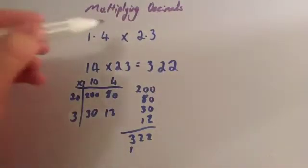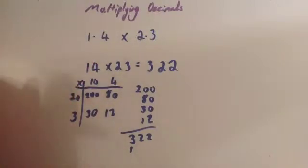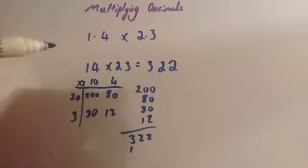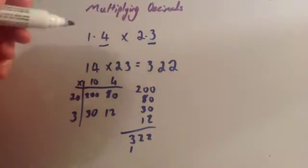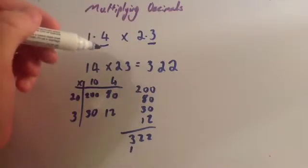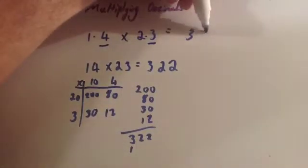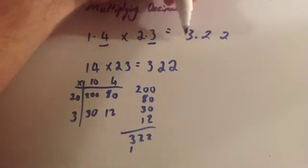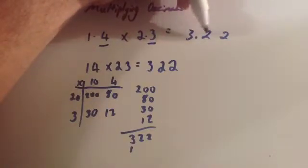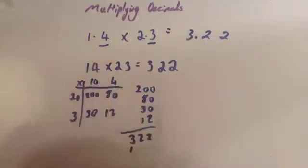Now we've multiplied the numbers together, we have to go back to the original question. The original question was 1.4 times 2.3. To find where the decimal point goes in the answer, you figure out how many digits are after the decimal point in the question. Here there's one digit after a decimal point, and here's another digit — so in the question, two digits are after the decimal point. That means in the answer, two digits need to be after the decimal point. So with 322, I put the decimal point here to get 3.22, which has two digits after the decimal point. So the answer to the multiplication is 3.22.